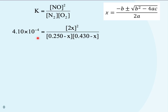In class, at this point we assumed x is much, much smaller than 0.250, and that turned out to be a reasonable assumption. But I want to show you how to solve the quadratic and confirm you get virtually the same answers. To use the quadratic equation, I need to get everything into the format: 0 = ax² + bx + c, with a coefficient in front of x², a coefficient in front of x, and a constant term with no x's.